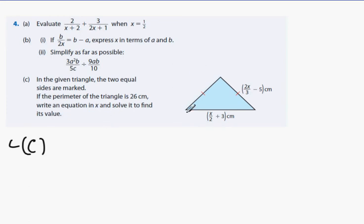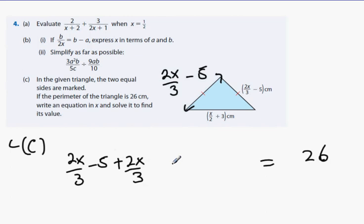If the perimeter of the triangle is 26 centimeters, write an equation next and solve it to find its value. What can I say about this length here? It's also 2x over 3 minus 5. Everybody happy with that? Yeah. And what happens when I add all three sides together? 26. So let's see what happens. 2x over 3 minus 5 plus 2x over 3 minus 5 plus x over 2 plus 3. Everybody happy with that?